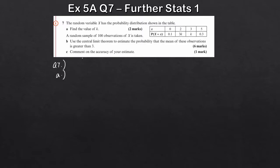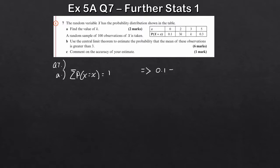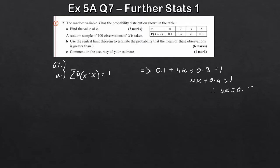We have a random variable X with a probability distribution shown in a table. Part (i) asks us to find the value of k. All you've got to remember is that the sum of all probabilities must equal 1. So 0.1 plus 3k plus k plus 0.3 equals 1, which gives 4k plus 0.4 equals 1, so 4k equals 0.6, and therefore k equals 0.15.